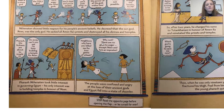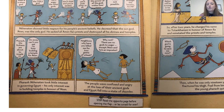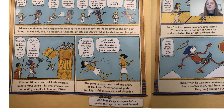Pharaoh Akhenaten took little interest in governing Egypt. His only interest was in building temples in honor of Aten. 'Pharaoh, the Nubians are about to invade us.' 'Go away, can't you see I'm busy building a temple for Aten?' The people were confused and angry at the loss of their ancient gods, and Egypt fell into a state of disorder. 'Neighbor, why have you killed me for two grains of wheat?' 'Why not? There are no gods to anger except Aten, and he's an imposter.'